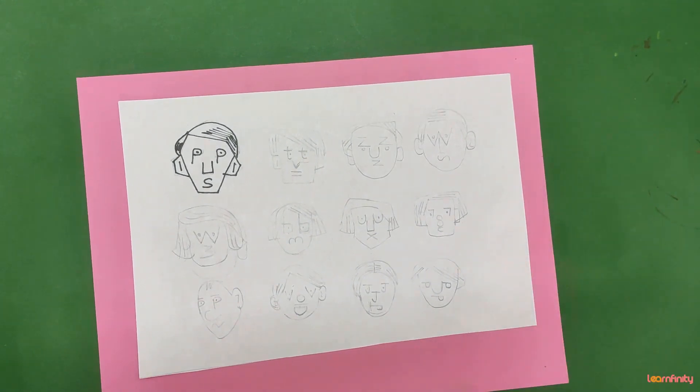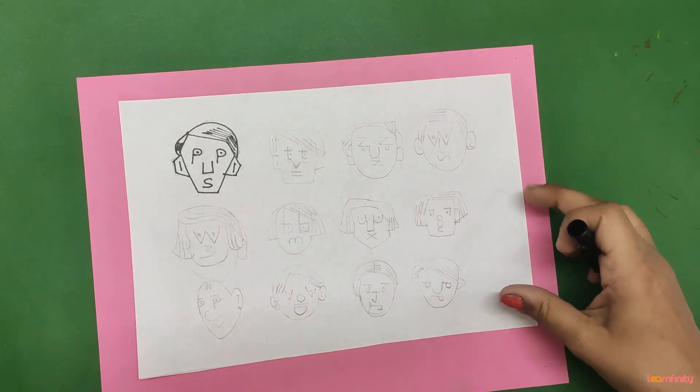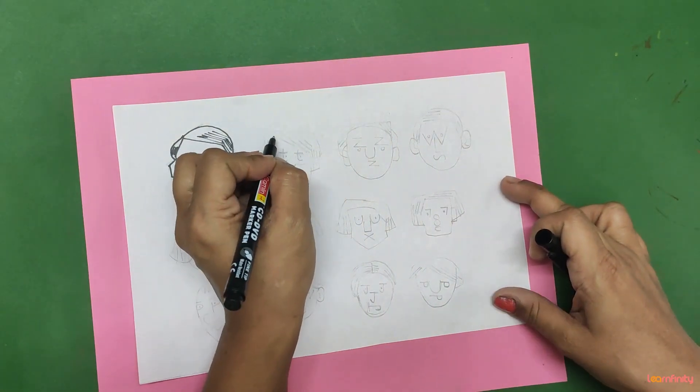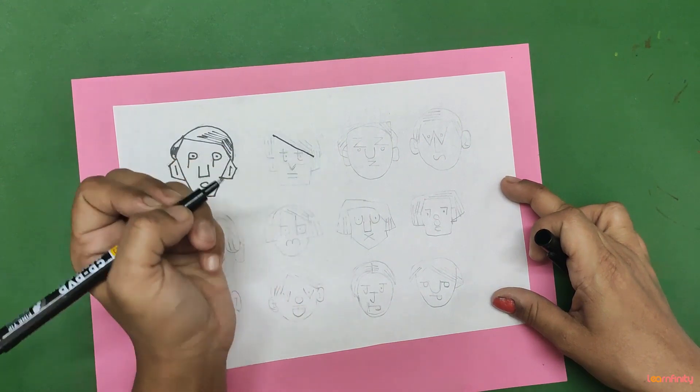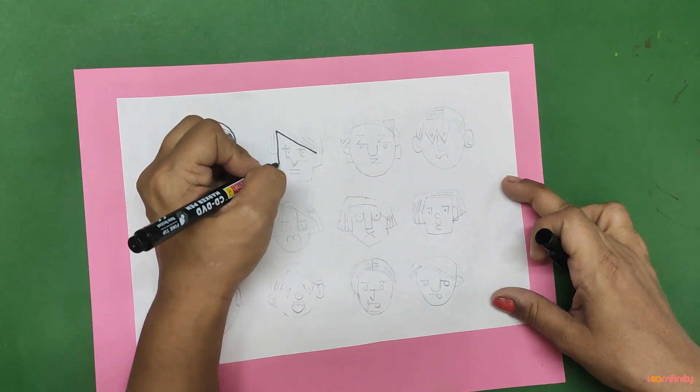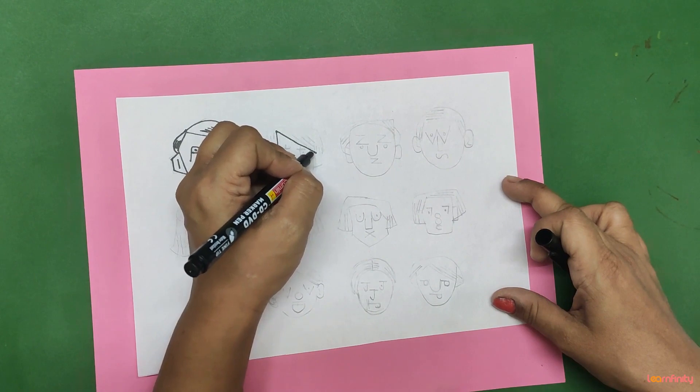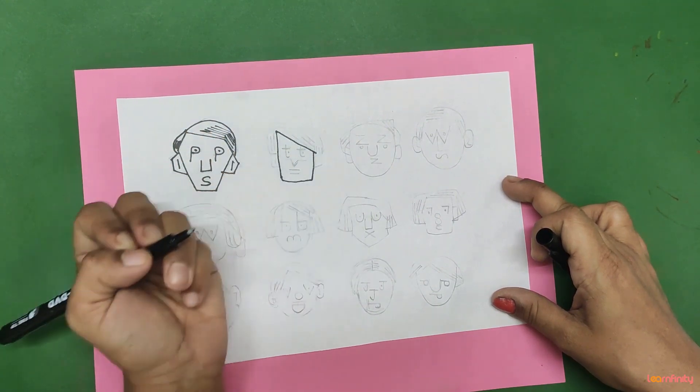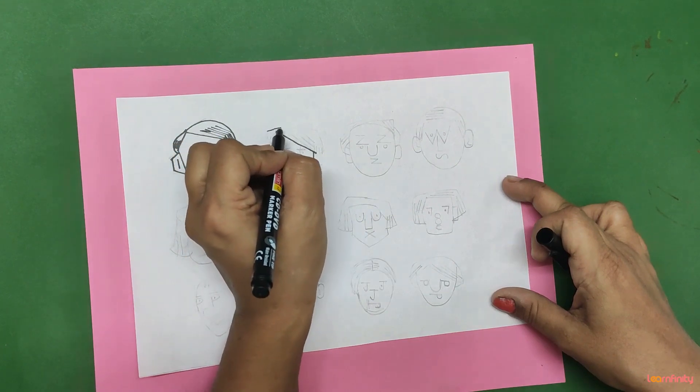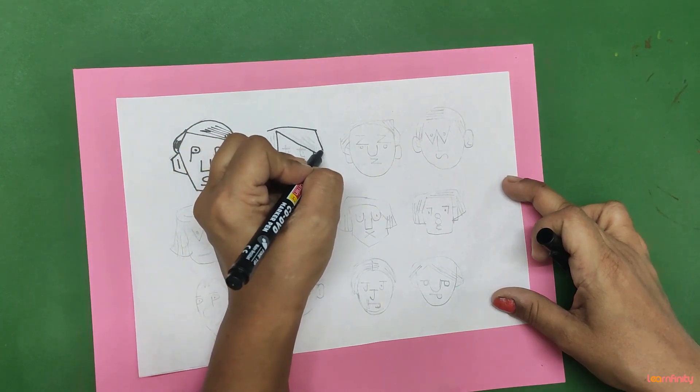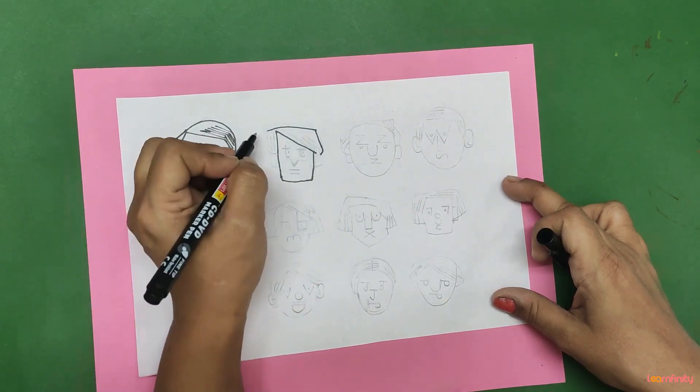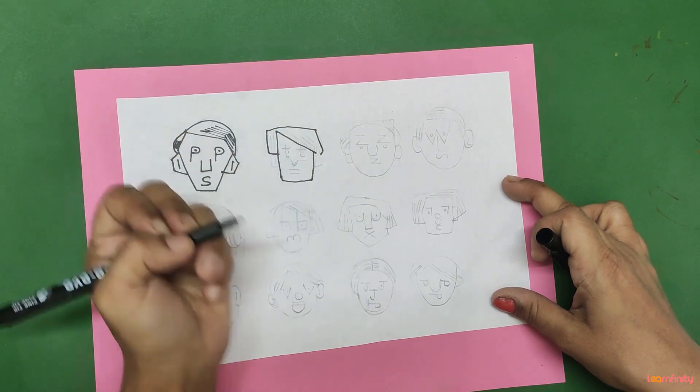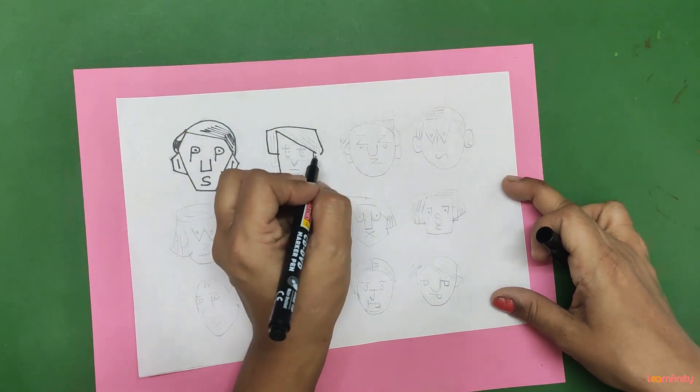We are now moving on to second. Here one more time slant line, then standing line, one more from this side standing line, slipping line like this, then this and this also joining it.